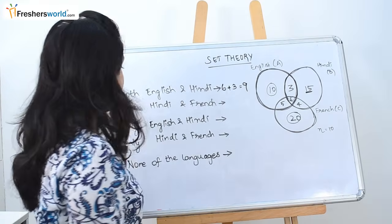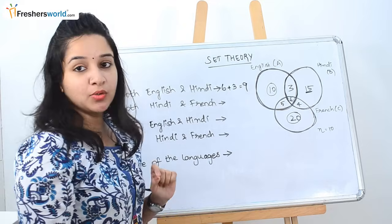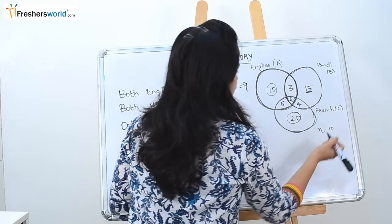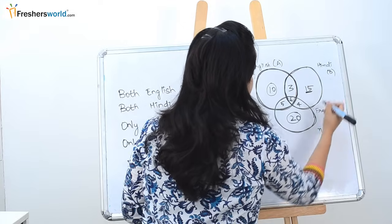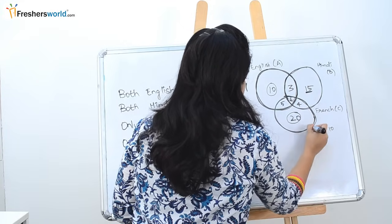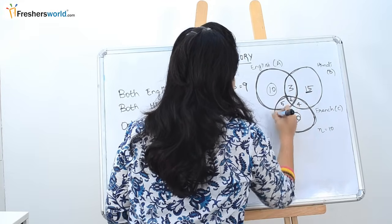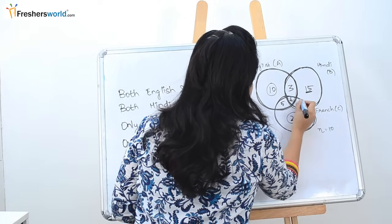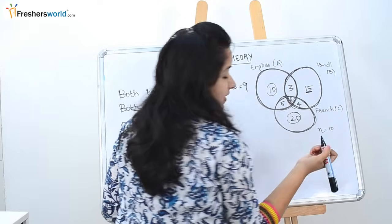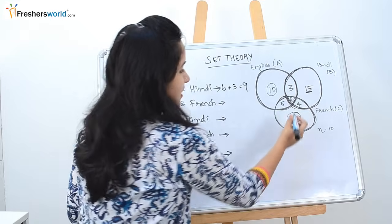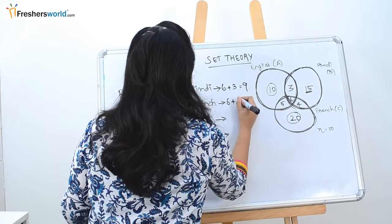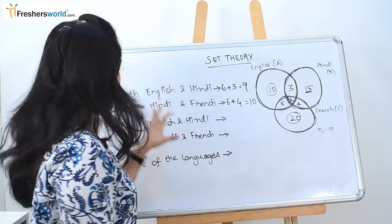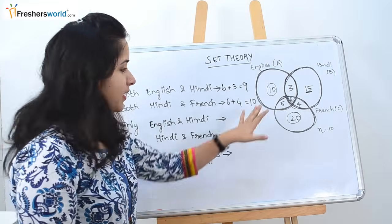Similarly, the next question asks for the people who know Hindi and French. Hindi and French are represented by circles B and C. The intersection of these two circles gives our answer, which is 6 plus 4, equal to 10. The number of people who know Hindi and French is 10.